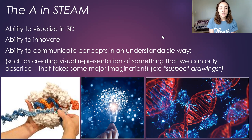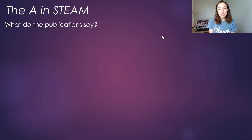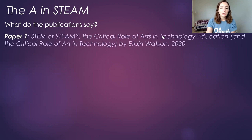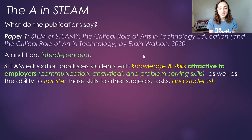So those are the three things I immediately thought of as important reasons that the A in STEAM is necessary. But there are also some scientific publications I wanted to talk about, because obviously my channel is not just for my opinions — it is for facts, statistic-based information, scientific publications, and information you can trust. The first paper I looked into is called 'STEAM or STEM: The Critical Role of Arts in Technology Education' by Itam Watson, written in 2020. The main things I want to point out is that they talk about how arts and technology are interdependent, and I think that goes for all of the letters in STEAM.